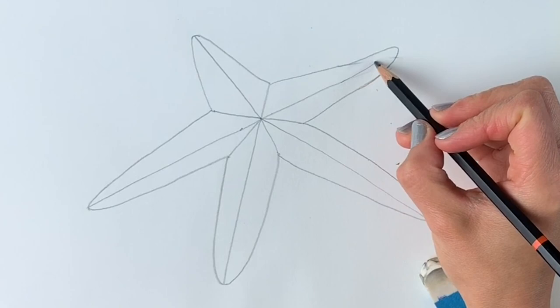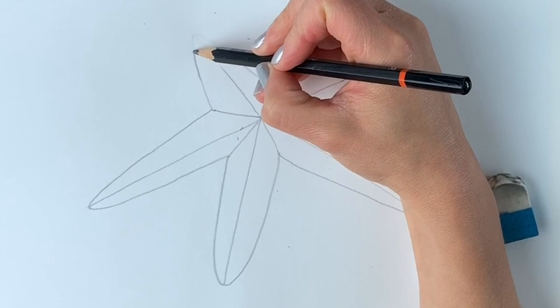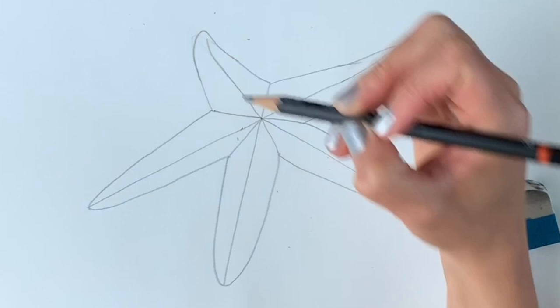And then we're going to do the same just here, so just erase the tip of this part. And this one's just going to kind of tilt towards the right hand side. Just like that. Because starfish are living animals and they're not completely straight.